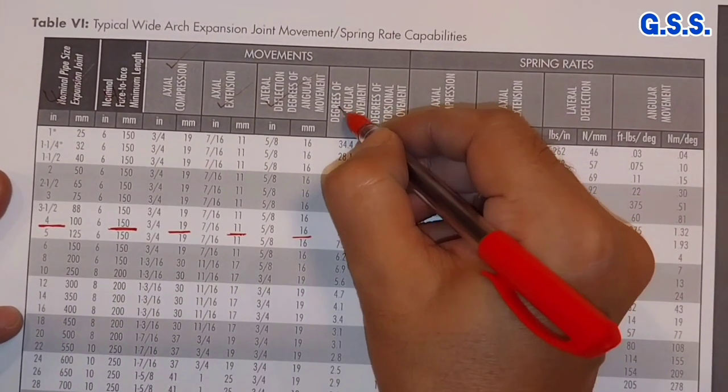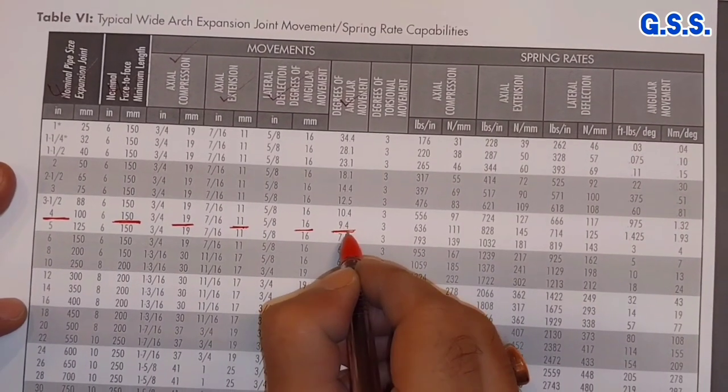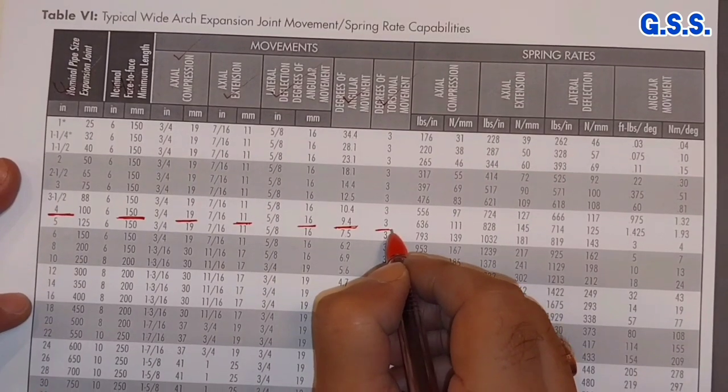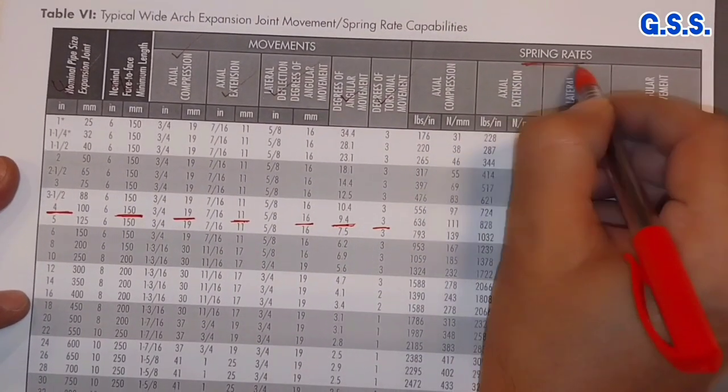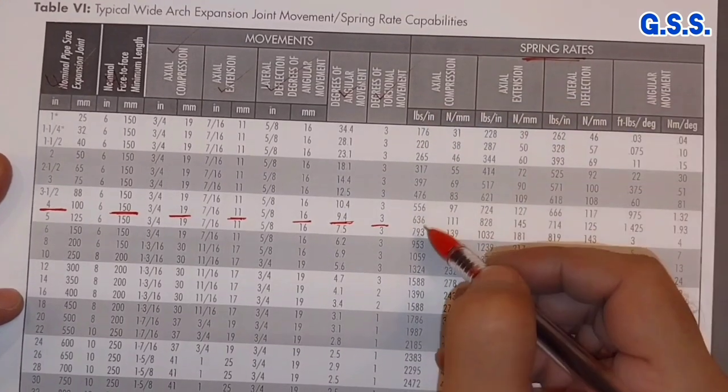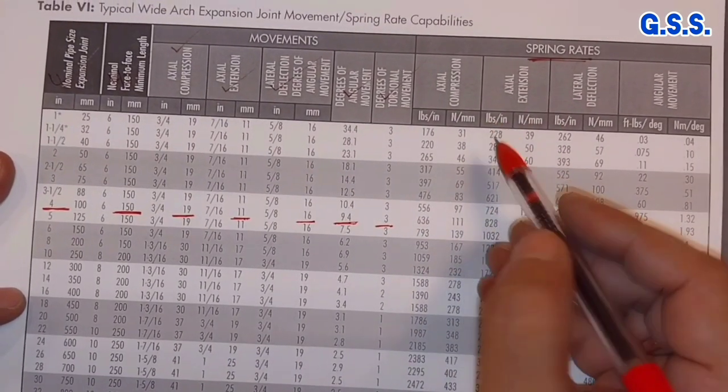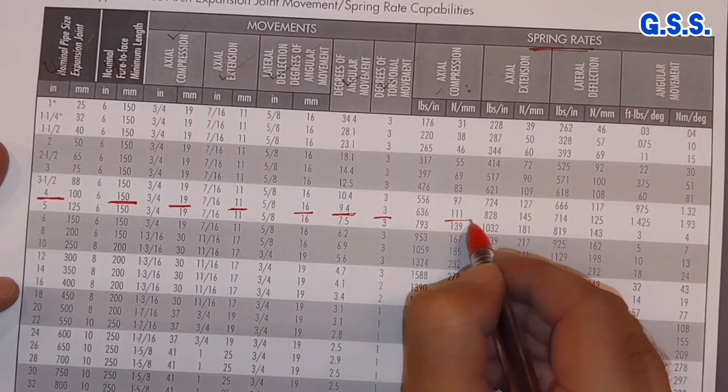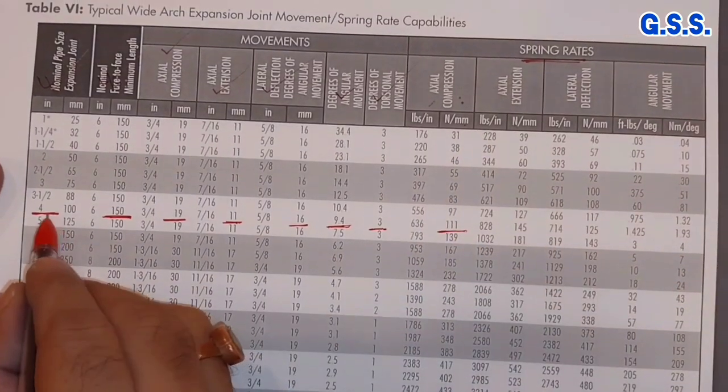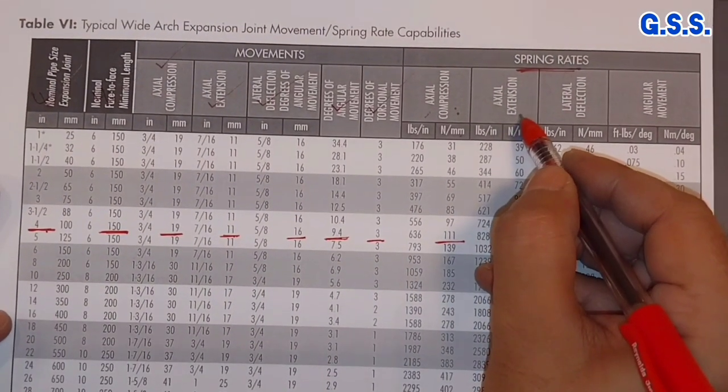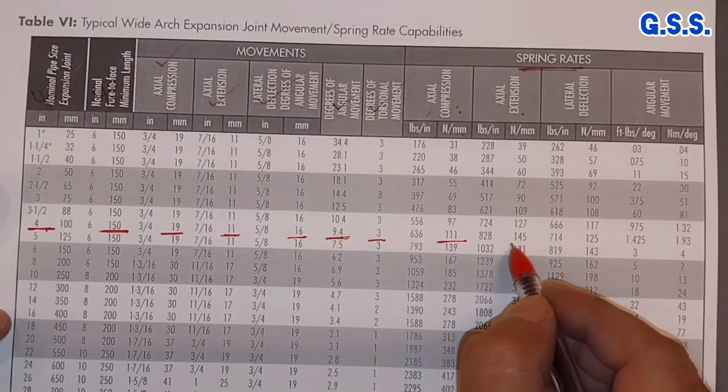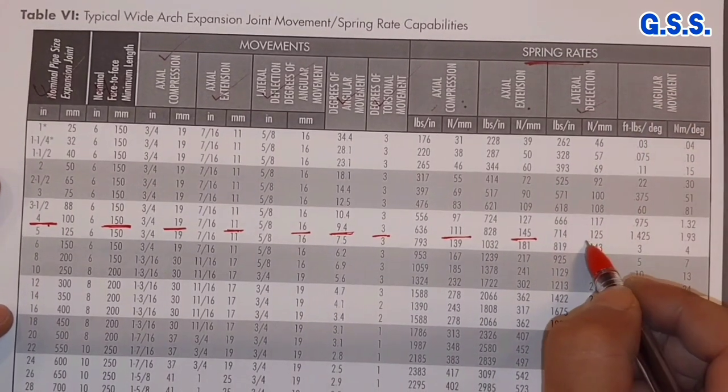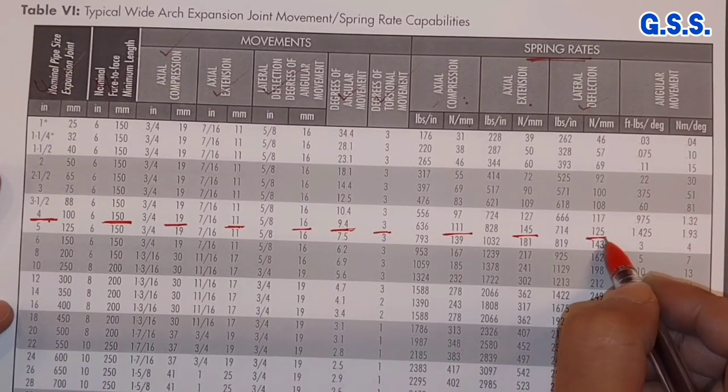And degree of angular movement, it is 9.4 degree. And torsional degree is 3 degree. And regarding spring rate, this standard also has specified the spring rate. For axial compression, spring rate is 111 Newton per millimeter for 4 inch size. For axial extension, spring rate is 145 Newton per millimeter. For lateral deflection, spring rate is 125 Newton per millimeter.